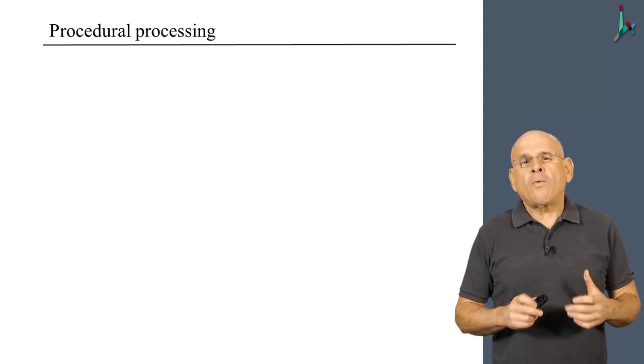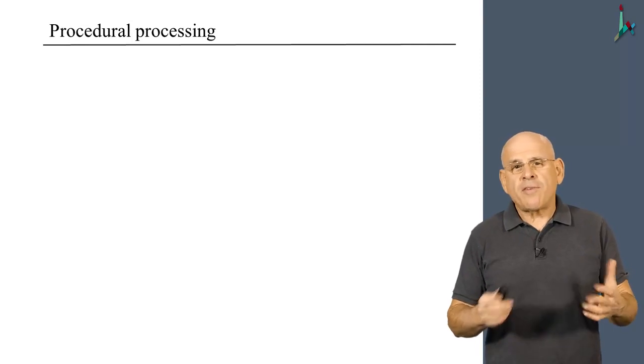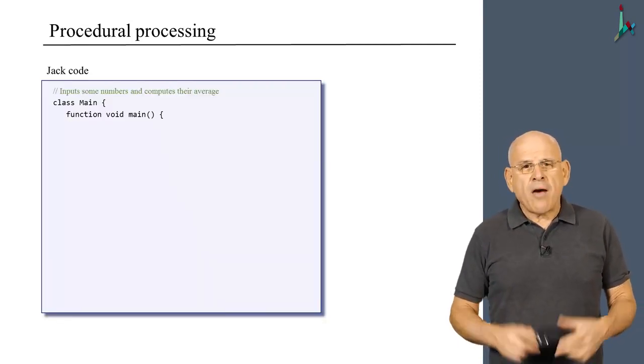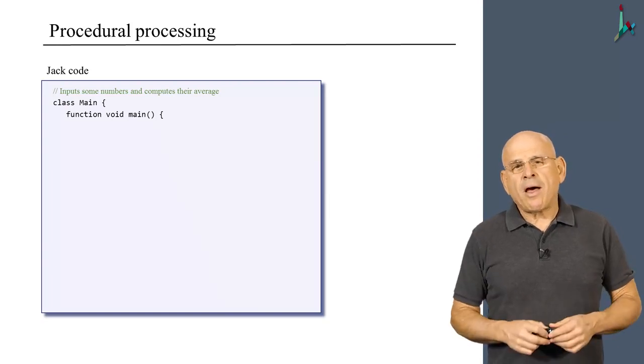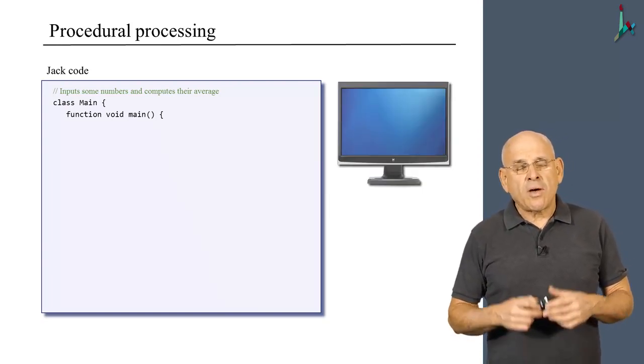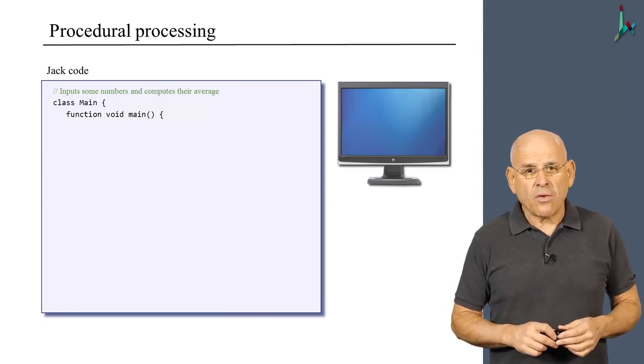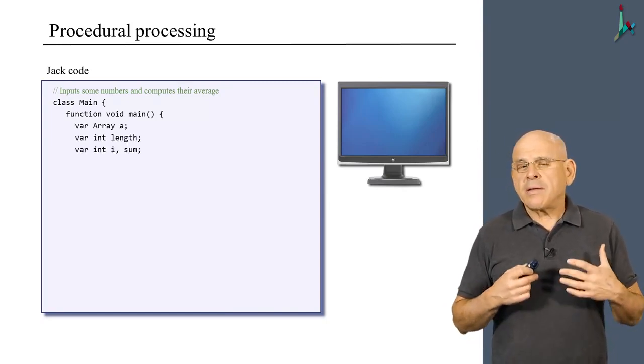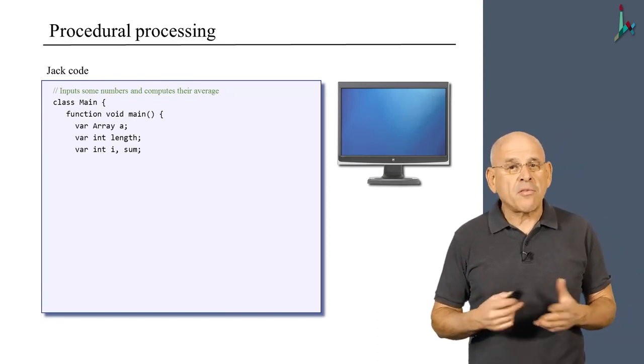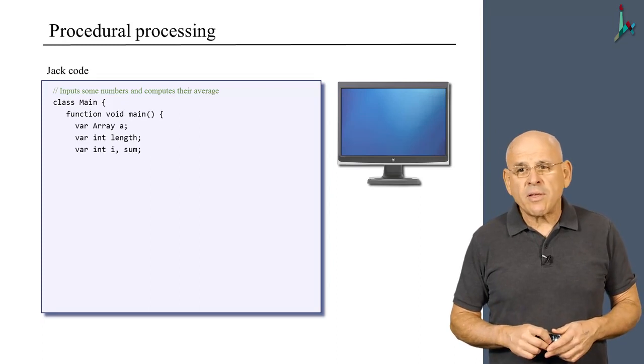And this program wants to read a set of numbers and compute their average. Now, in order to illustrate this program, we need an output device. So here it is. So let's start to look at the code. We begin by declaring a bunch of variables, an array variable called a, and three integer variables.